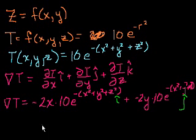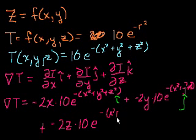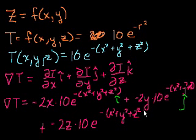Finally, the partial derivative of the temperature function with respect to z. Treating the other two variables as constants and applying the chain rule, that's minus 2z times 10e to the minus x squared plus y squared plus z squared, all times the unit vector k.